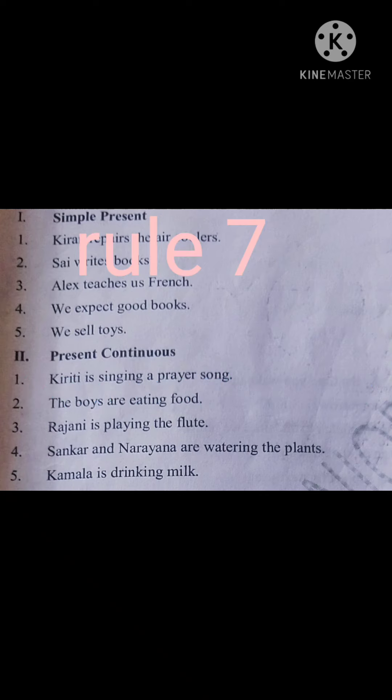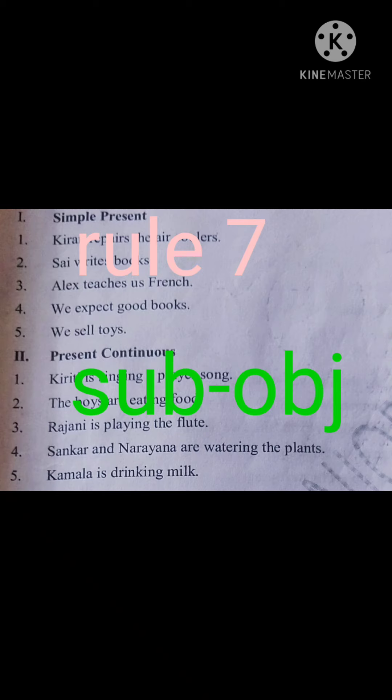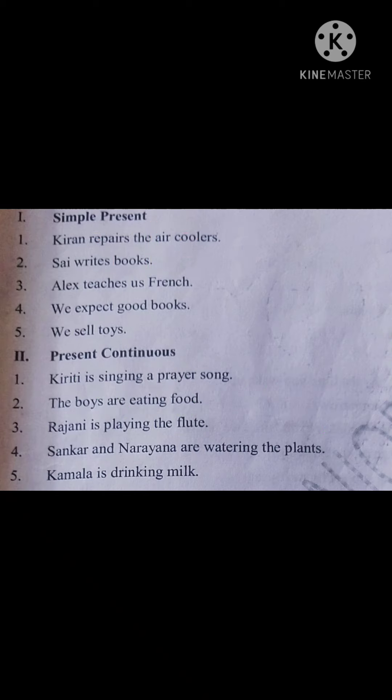For simple past, use: was or were. For present continuous, use: is/am/are plus being. For past continuous, use: was/were plus being. For present perfect, use: have been or has been. For past perfect, use: had been. For future perfect, use: will have been or shall have been. For simple future, use: will be, shall be, can be, may be, might be, ought to be, or need to be.